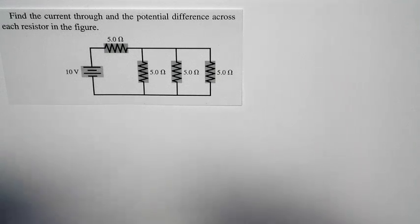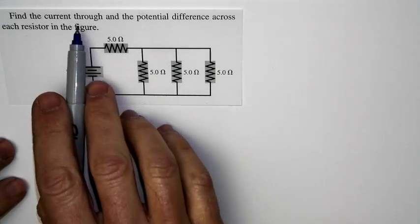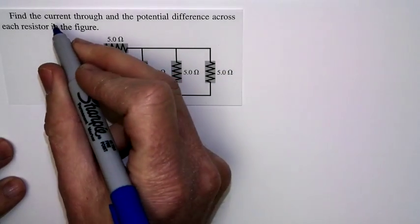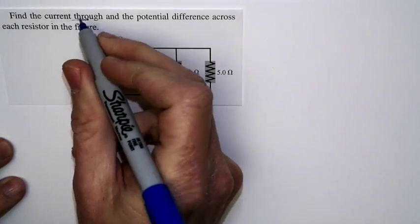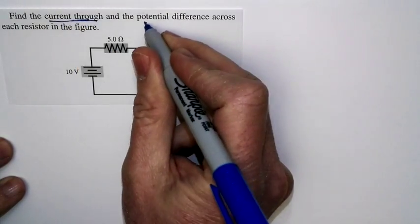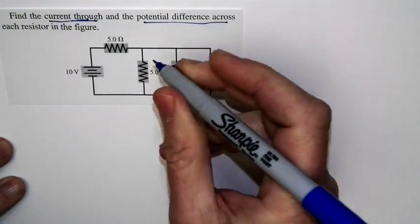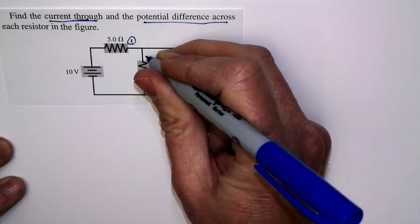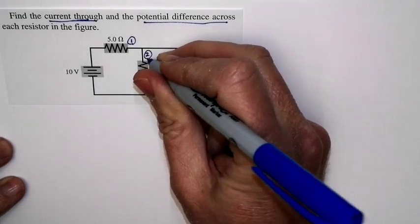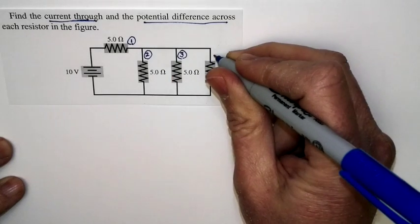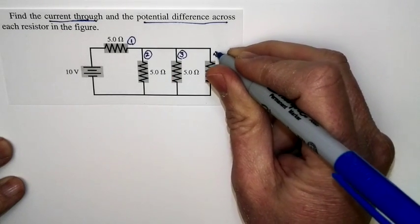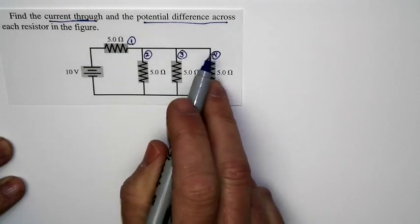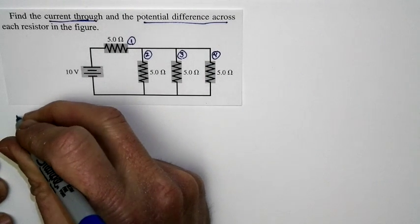We've got a complex circuit problem in which we're asked to find the current through and the potential difference across each resistor in the figure. Let's label each resistor. We'll call this one resistor 1, this one resistor 2, this one resistor 3, and this one resistor 4. We have to find the current through and the potential difference across each one.